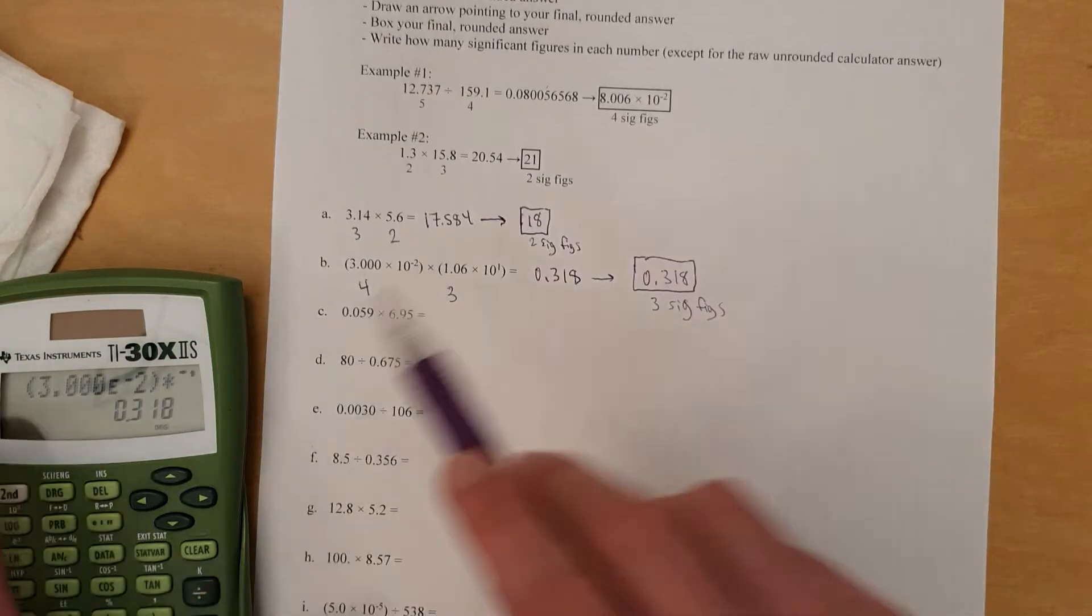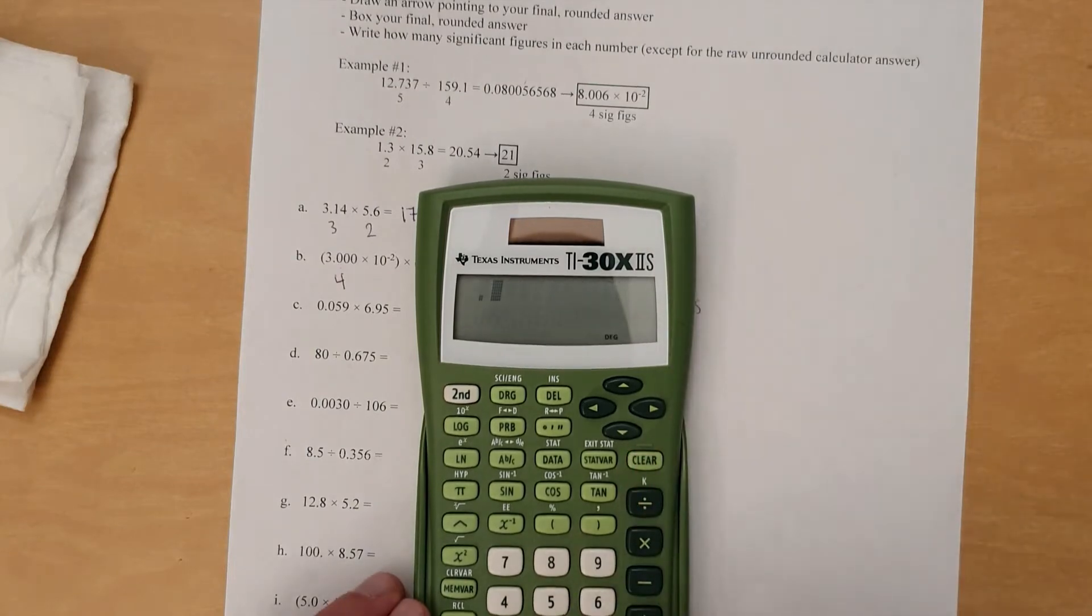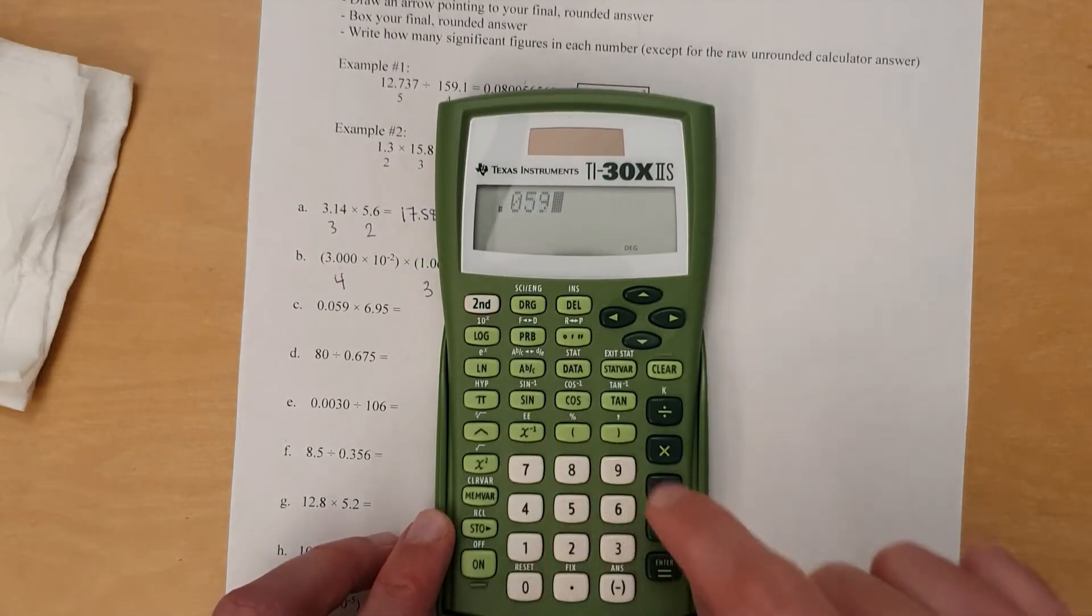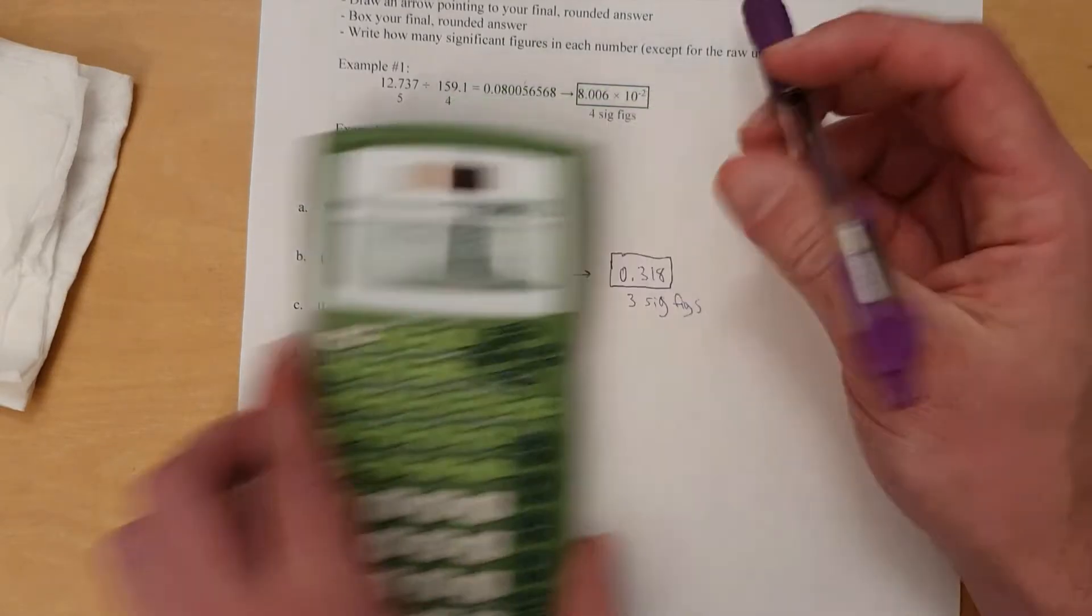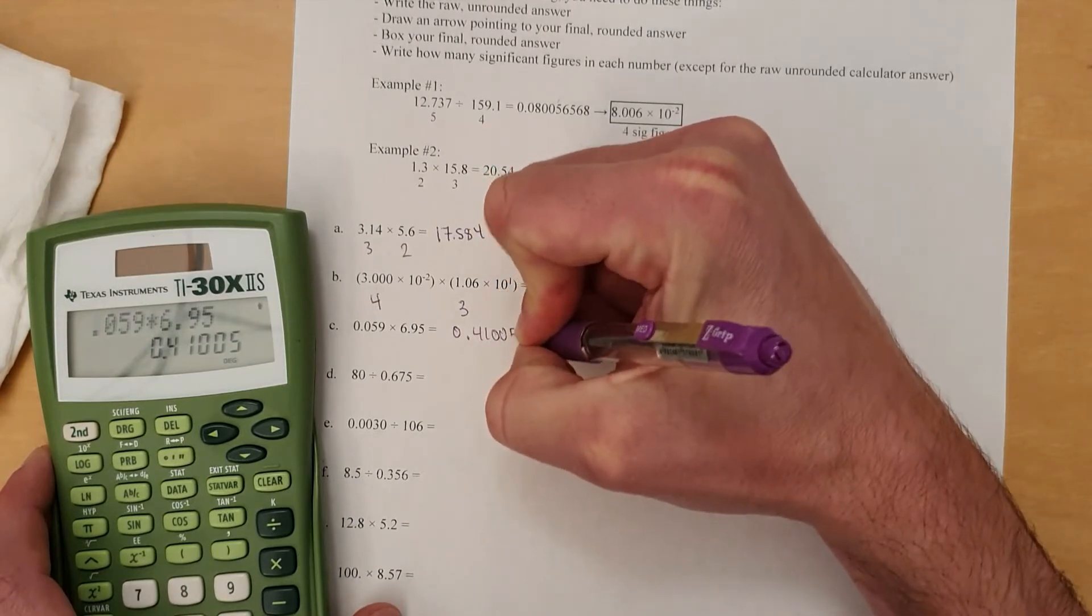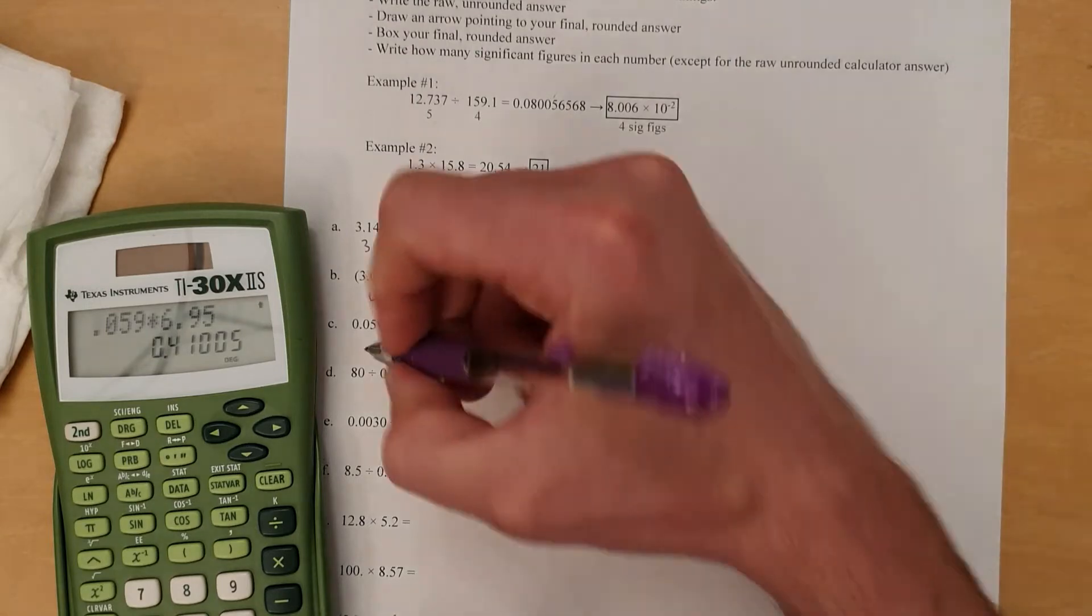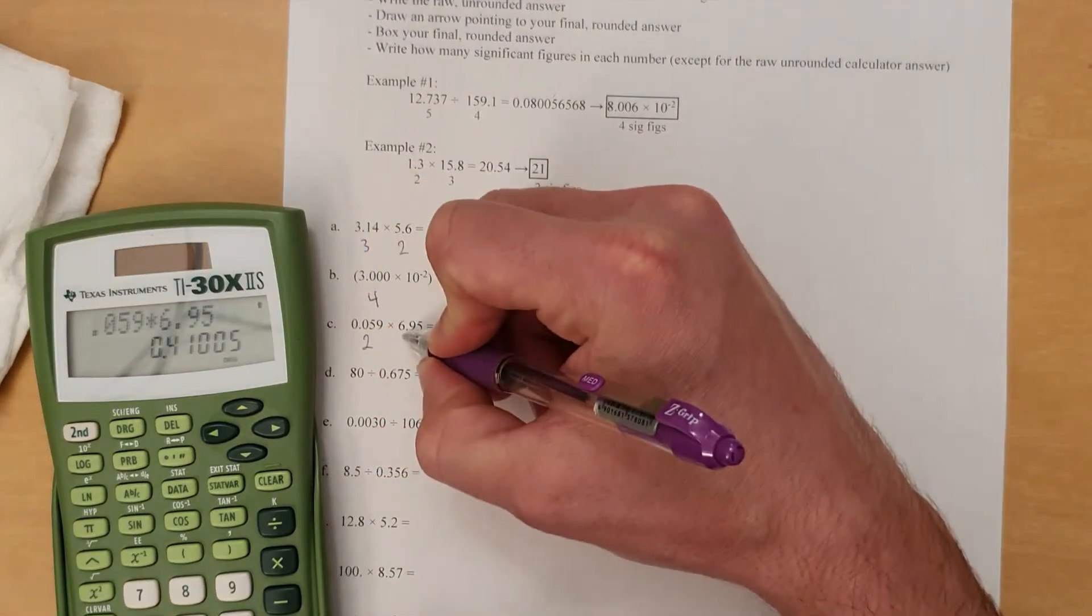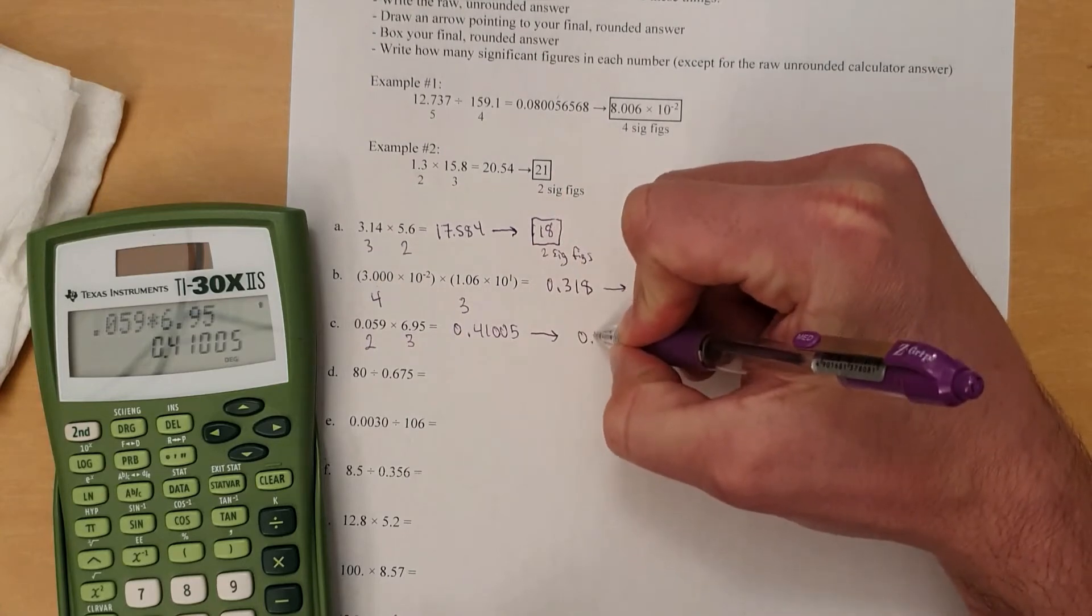So let's move on. So 0.059 times 6.95 gives that 0.41005. And, let's see, what is that? That is 2 significant figures. This is 3 significant figures. You round this to 2 sig figs, 0.41.